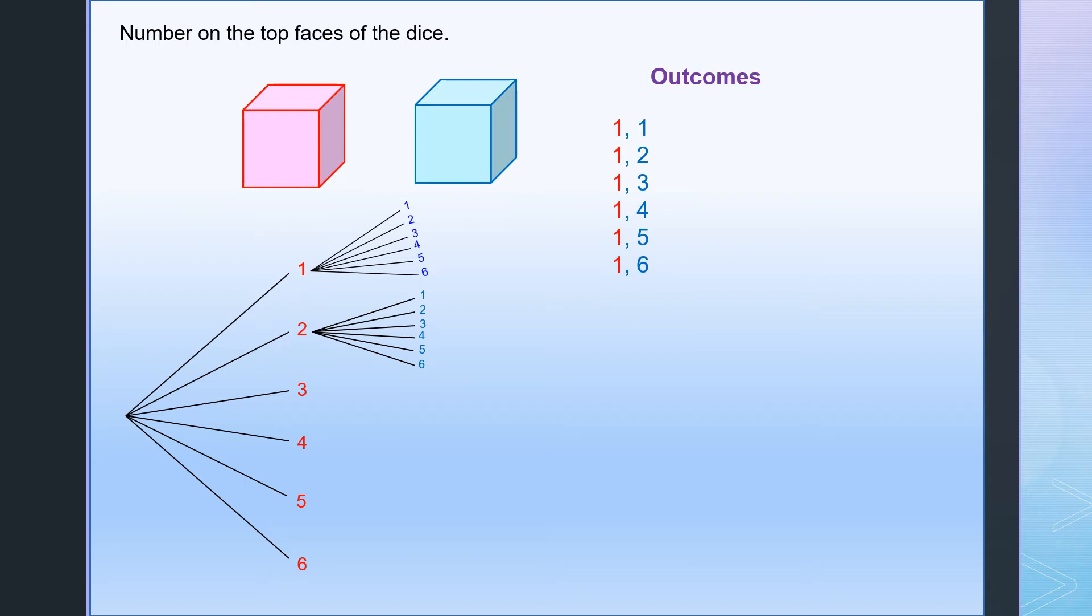It can be (1,1), (1,2), (1,3), (1,4), (1,5), and (1,6). If the number on the red die is 2, then we can have another set of 6.